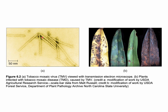The tobacco mosaic virus has a helical, tube-like structure. Notice on the scale bar in the bottom left corner — now we're talking about nanometers. With bacteria we mostly discuss microns, but at the viral scale, we're talking about nanometers.